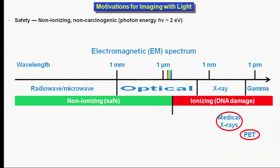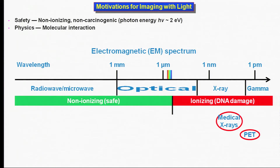Why do we use light? Unlike ionizing radiation, visible and IR light is safe for human imaging. Fundamentally speaking, light occupies the only region of the vast EM spectrum that allows us to probe molecules.